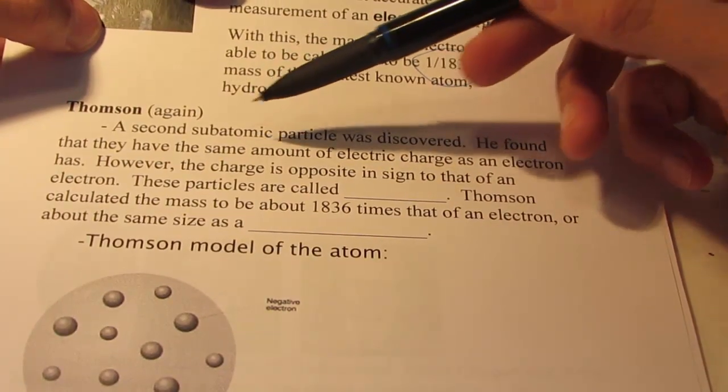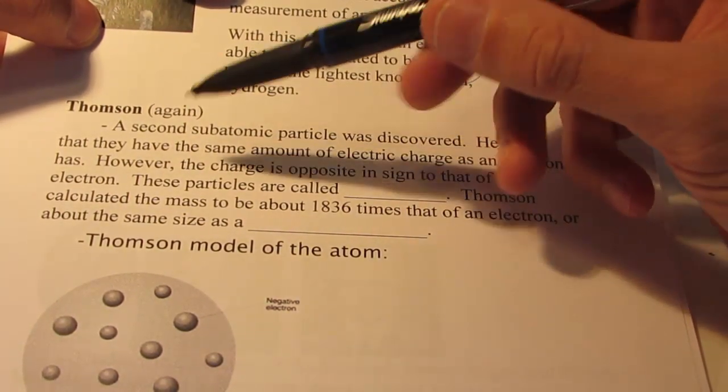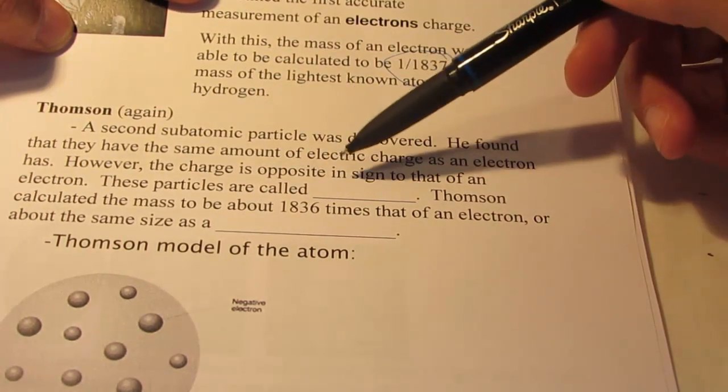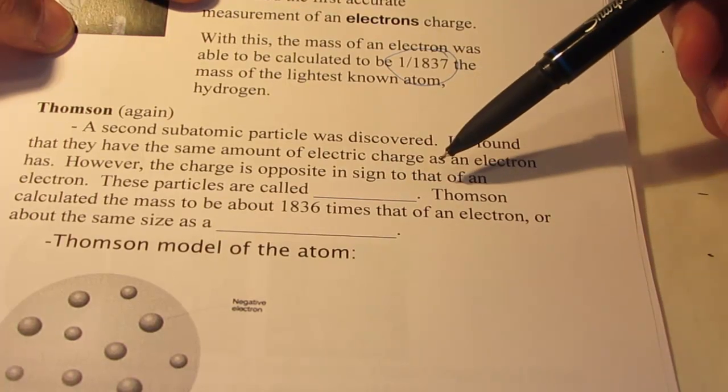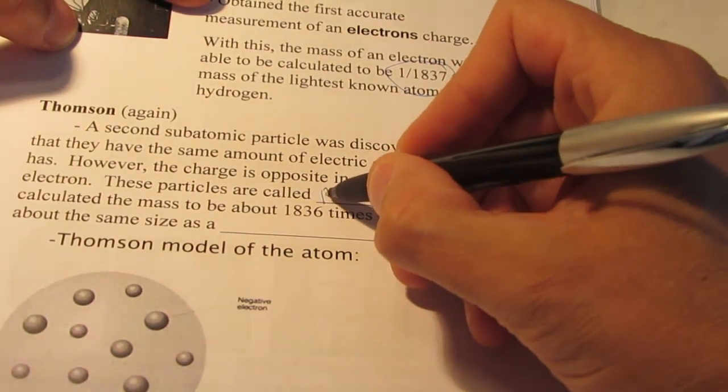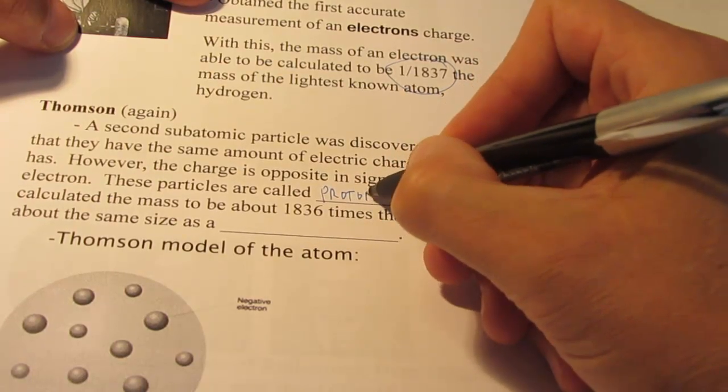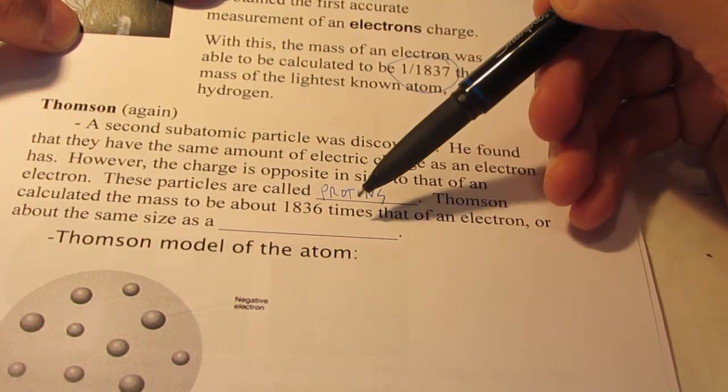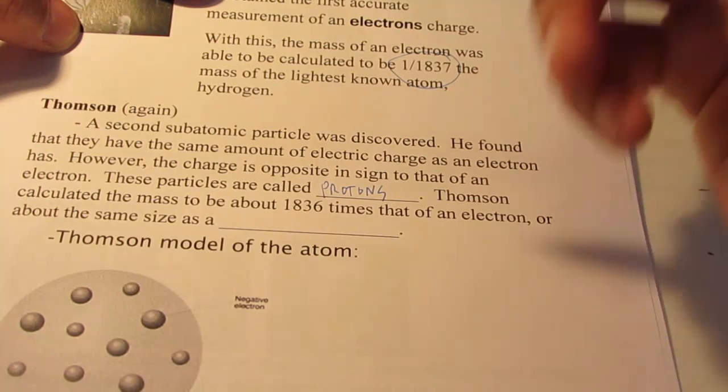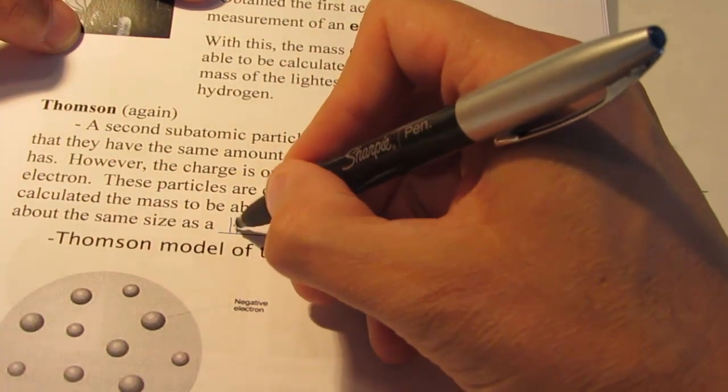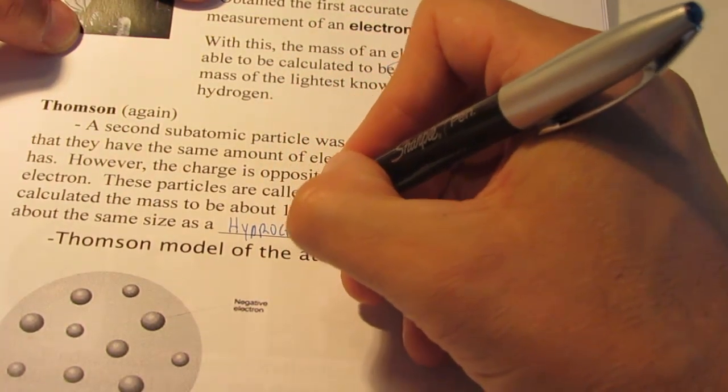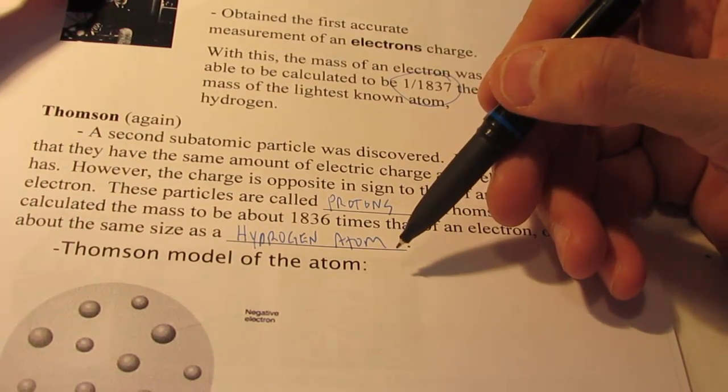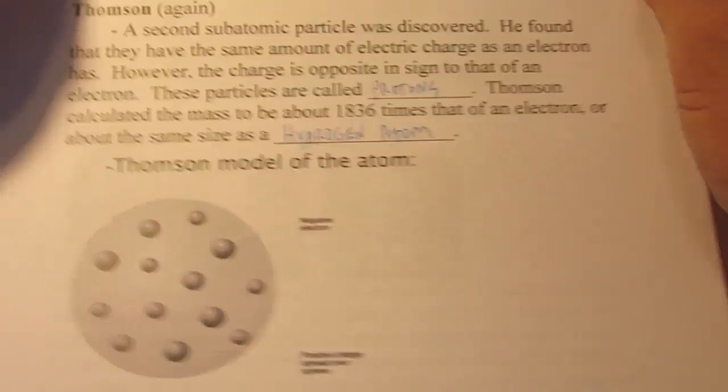J.J. Thompson again. A second subatomic particle is discovered. He found that these particles have the same amount of electric charge as an electron. However, the charge is opposite in sign to that of an electron. These particles, of course, are called protons. Thompson calculated the mass of these protons to be about 1,836 times that of an electron, or approximately the same size as a hydrogen atom.